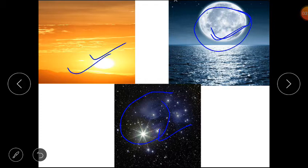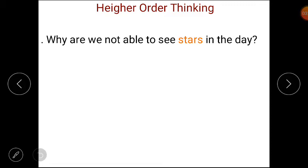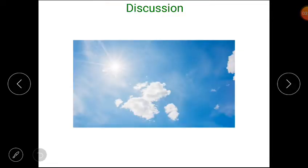Now it's time for higher order thinking question. Question is, why are we not able to see stars in the day? Hamein day mein stars kiyo nahi nazar aate hai? Stars, students, stars are always present in the sky. Woh hamesha sky mein present rehte hai. We cannot see them in the day because of the bright light of the sun. Kyunki sun ki bright light ke karan hamein wo dikhai nahi dehte hai. I hope it is also clear to you all.